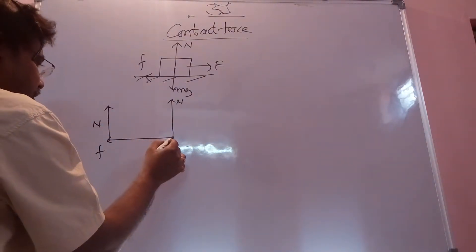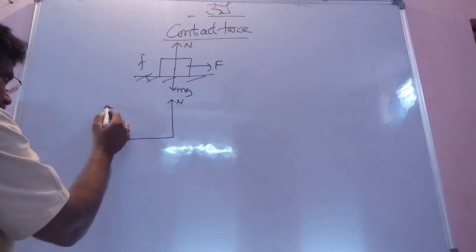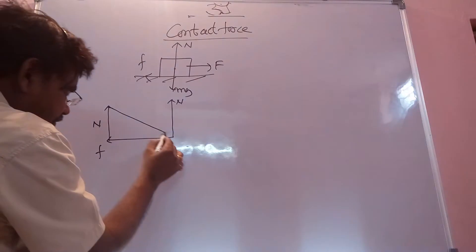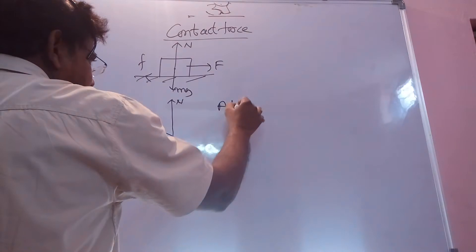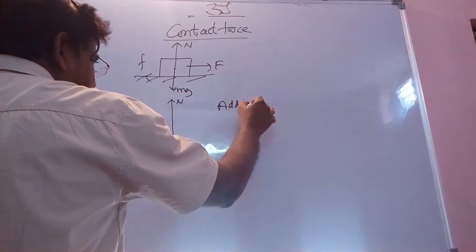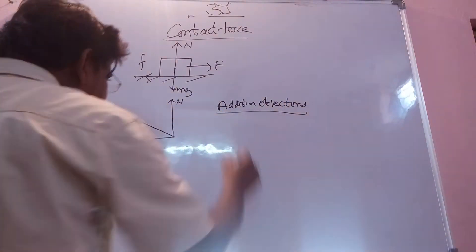This is one vector. This vector at initial position, second vector at final position, I am joining. This process is called addition of vectors. By this process, we are finding the resultant vector.